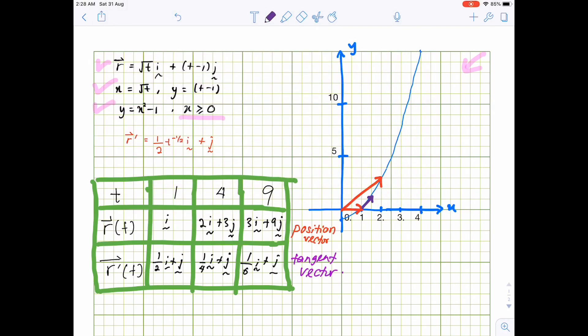And then the tangent vector, one-fourth i plus j. One unit for the j. Somewhere here.